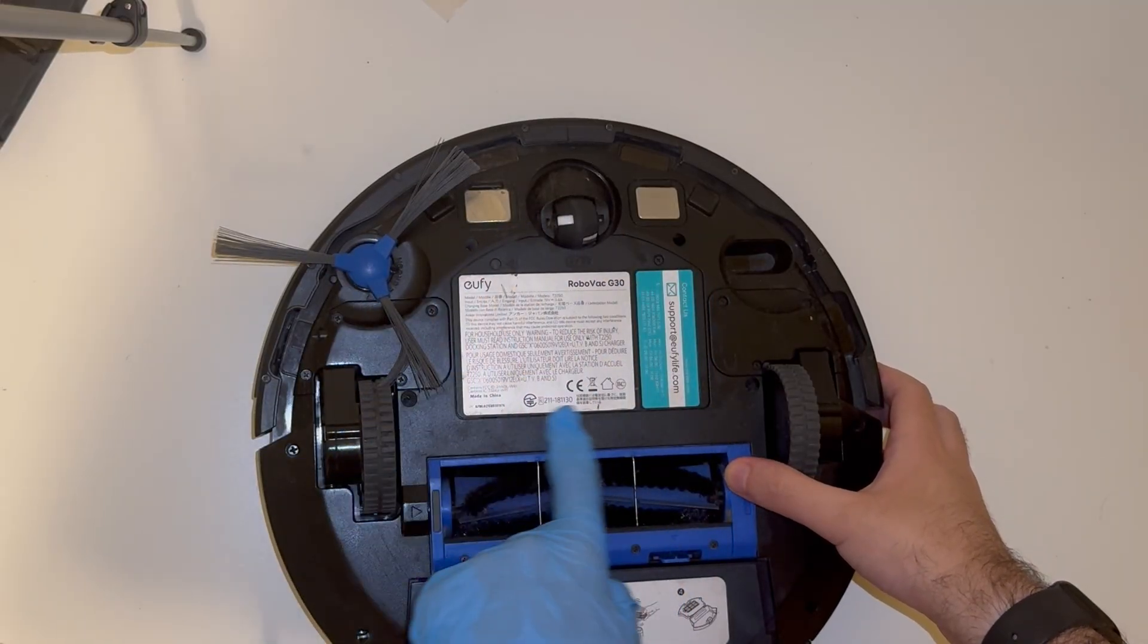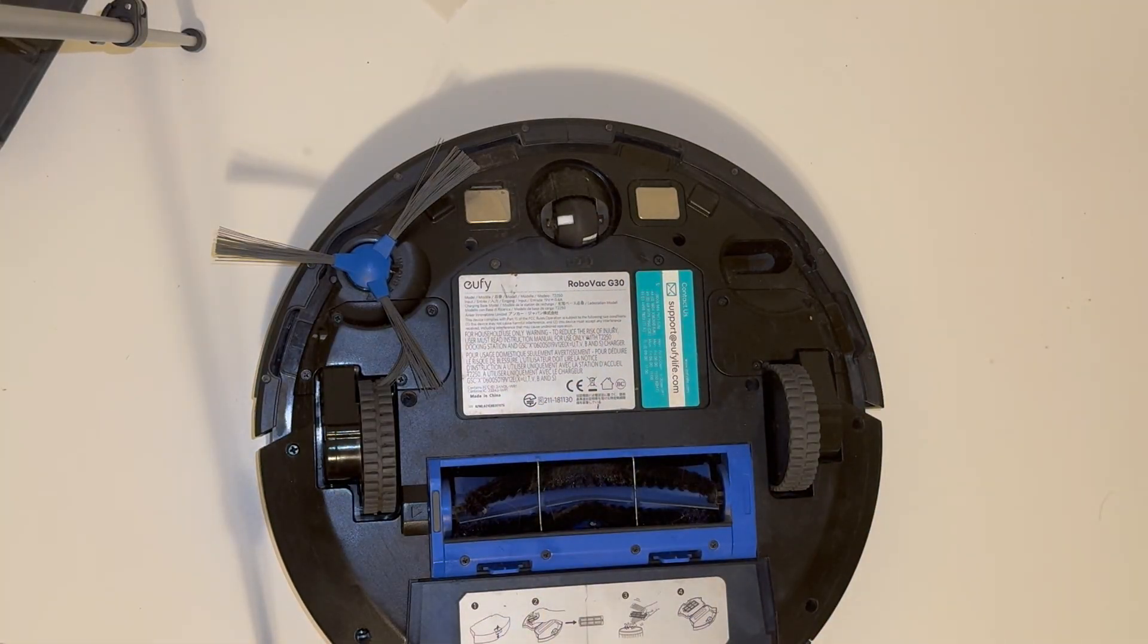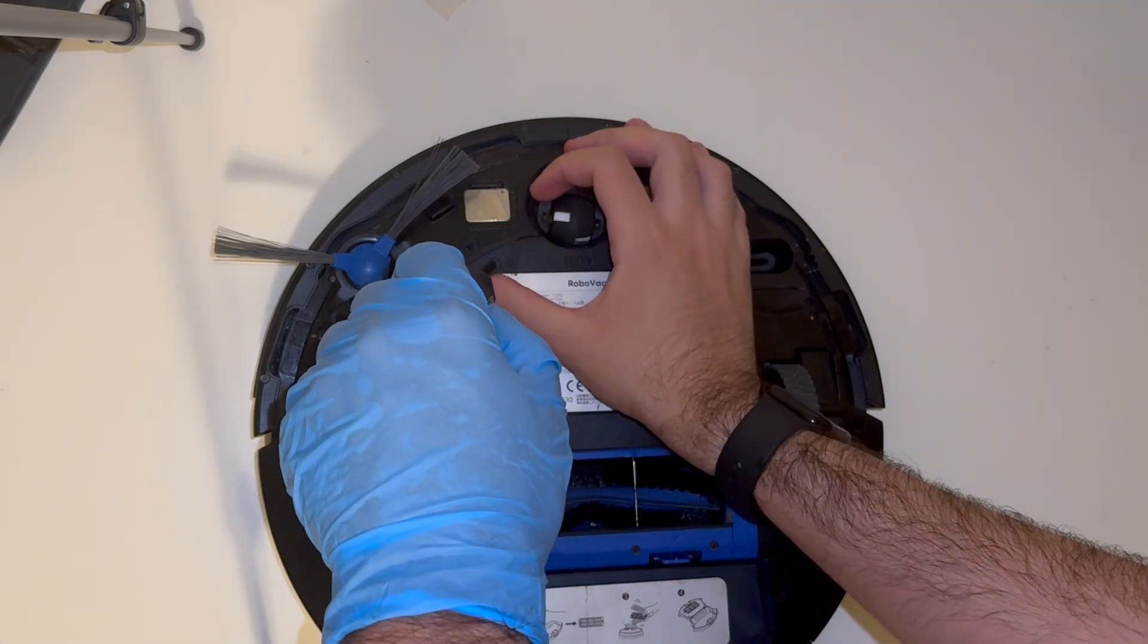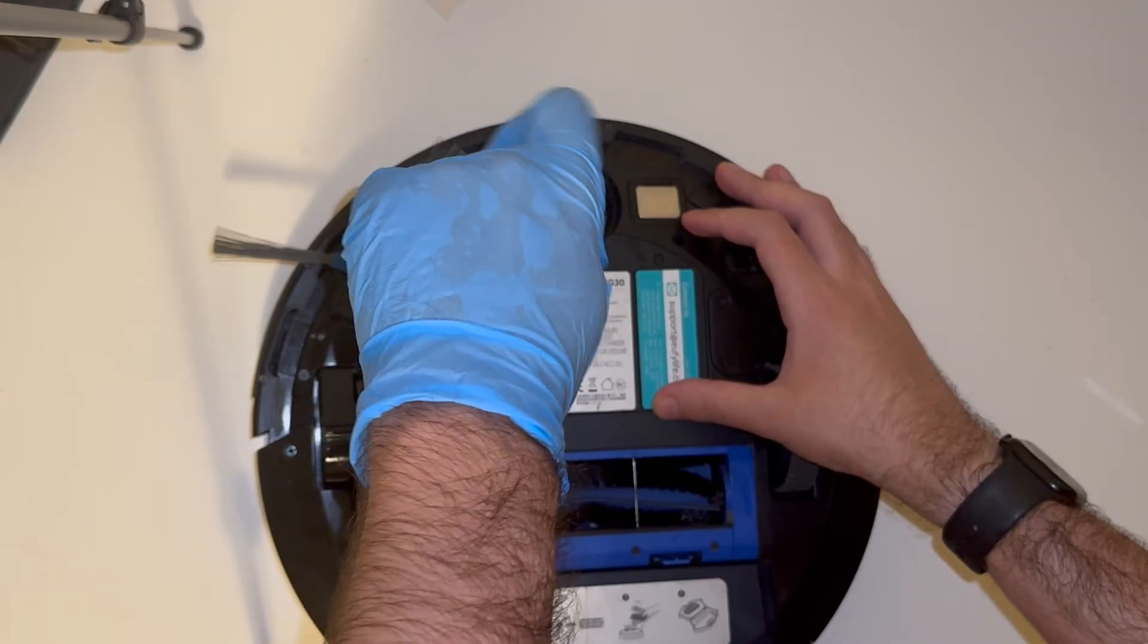If your UFU robot vacuum is having battery life issues and is not cleaning your old home, consider using the auto return setting where the robot vacuum will return to the station and automatically charge up to 80% and then resume cleaning.